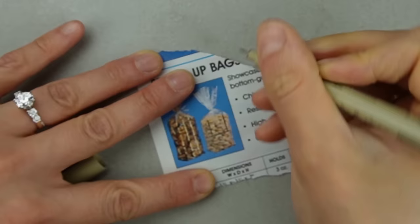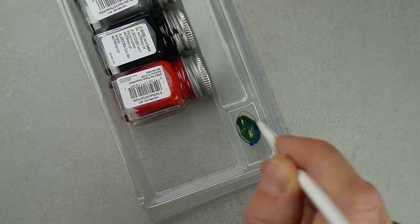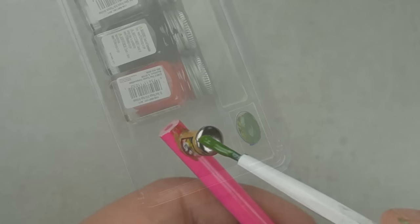For the peanut butter jar I drew a simple label over a bag of peanuts from a catalog. This brand of peanut butter of my own creation is called GIF. I don't have any green oil paint so I'm mixing some blue and yellow together.